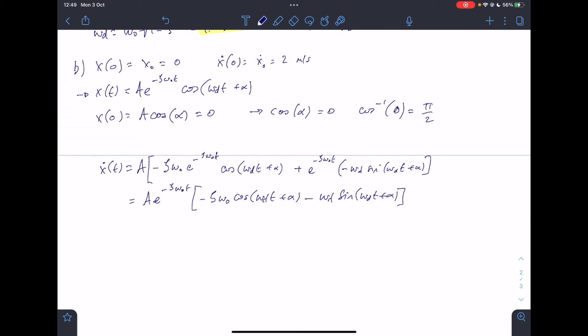So x dot of zero becomes amazingly much simpler. E to the zero is one. Cosine of alpha, what's cosine of alpha? Zero. So if I write it out in full, x dot of zero, well that we know is 2. What's sine of pi by 2?